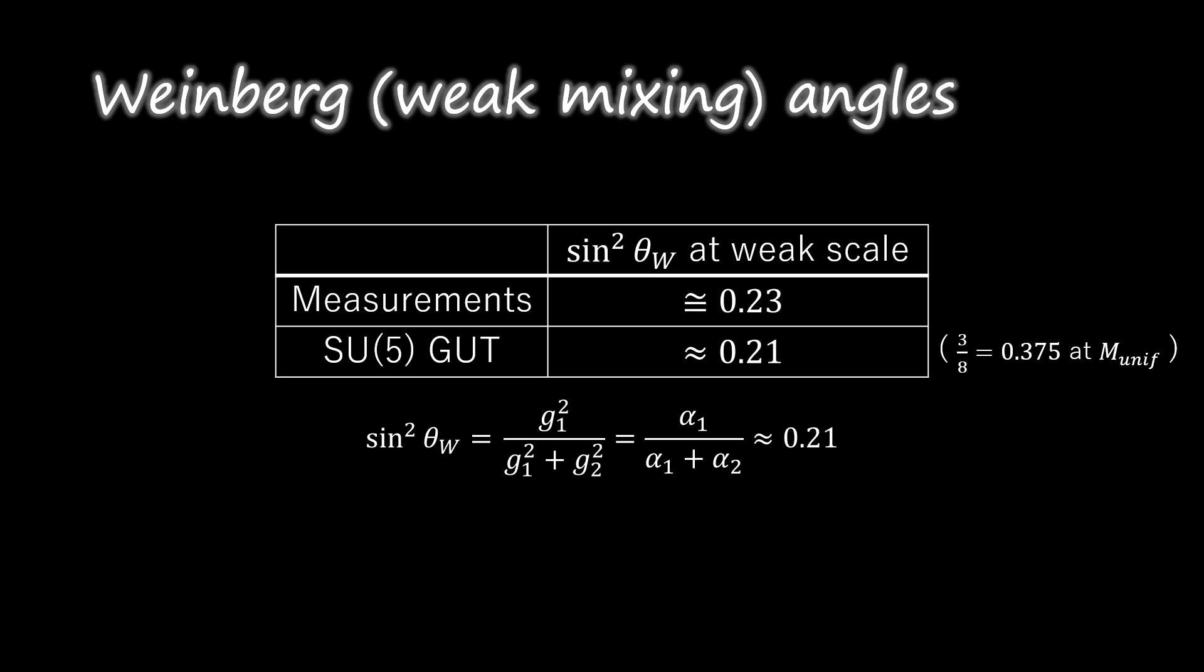For the SU5 unification, there are two parts of the calculation. First, the symmetry structure enters, but that determines sin²θw where the symmetry holds, at the unification scale.